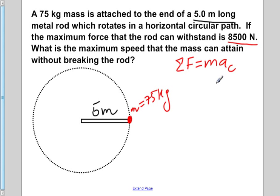So from here, we now have to calculate the maximum speed that our mass can attain without breaking the rod. We remember that the equation for the centripetal acceleration is given by v squared over r, v being the velocity of the object, r being the radius.